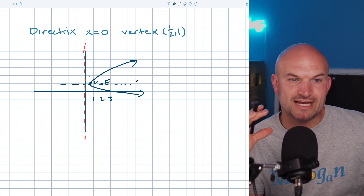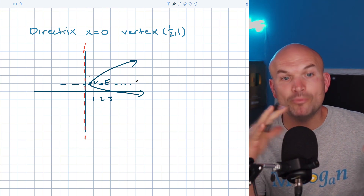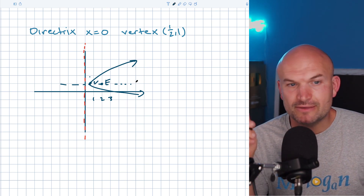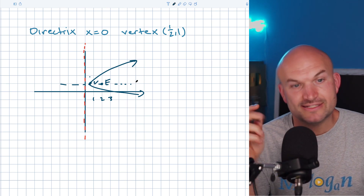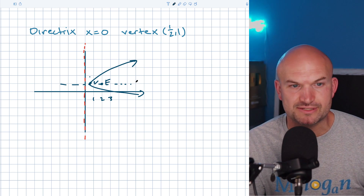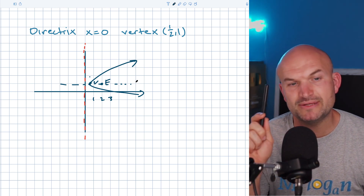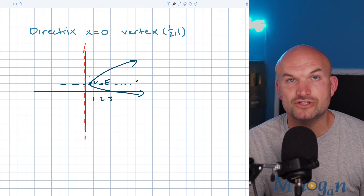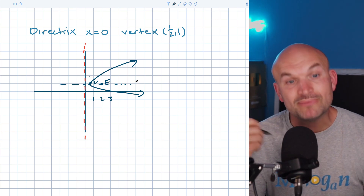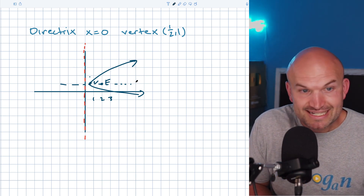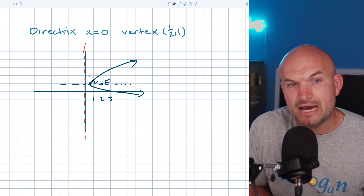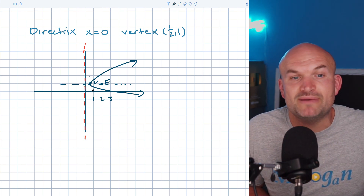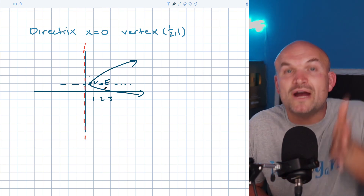So we have our parabola opening up towards our focus. The other thing we need to understand is the relationship between our vertex and our focus, as well as the relationship between the vertex and the directrix. When we're going from vertex to directrix, that distance is what we call P. So P is going to equal that distance. Now we don't know the distance from vertex to focus yet — we just know it's going to be to the right of the vertex.